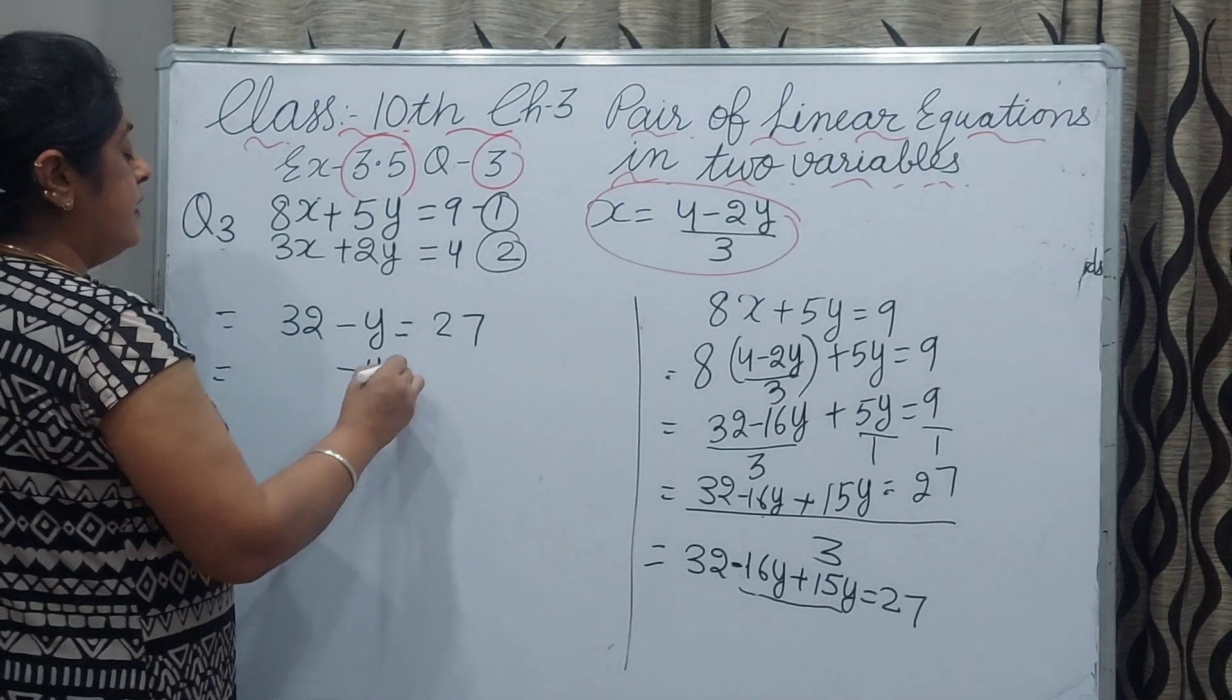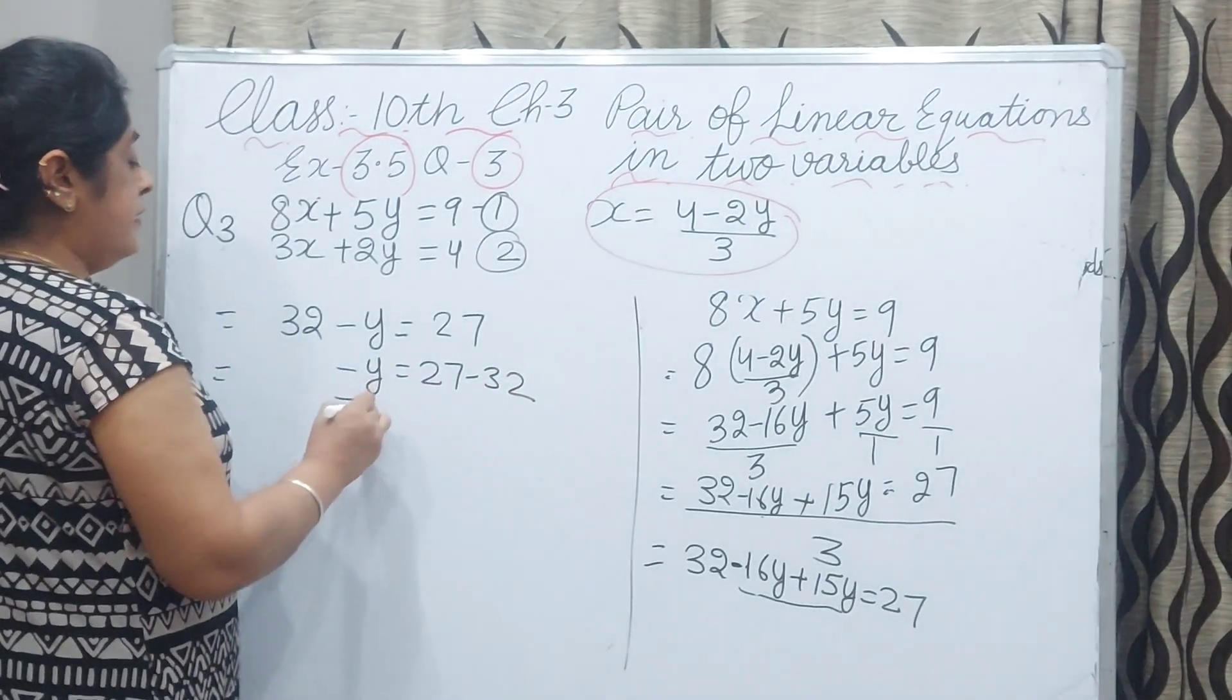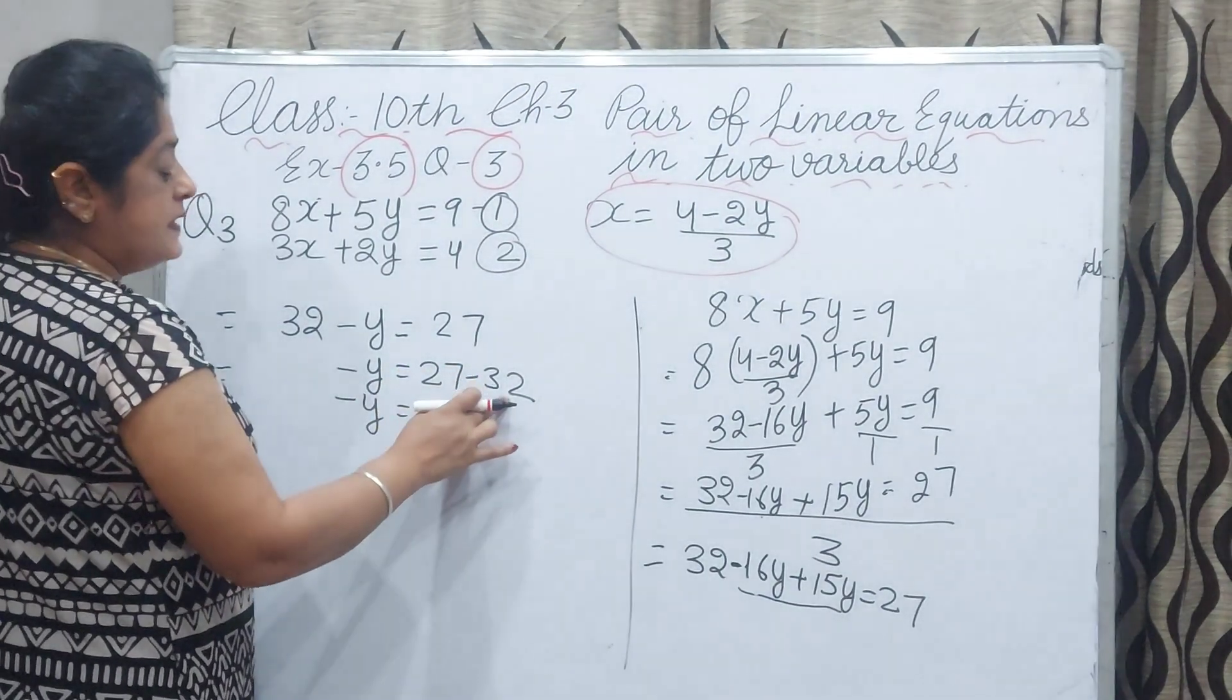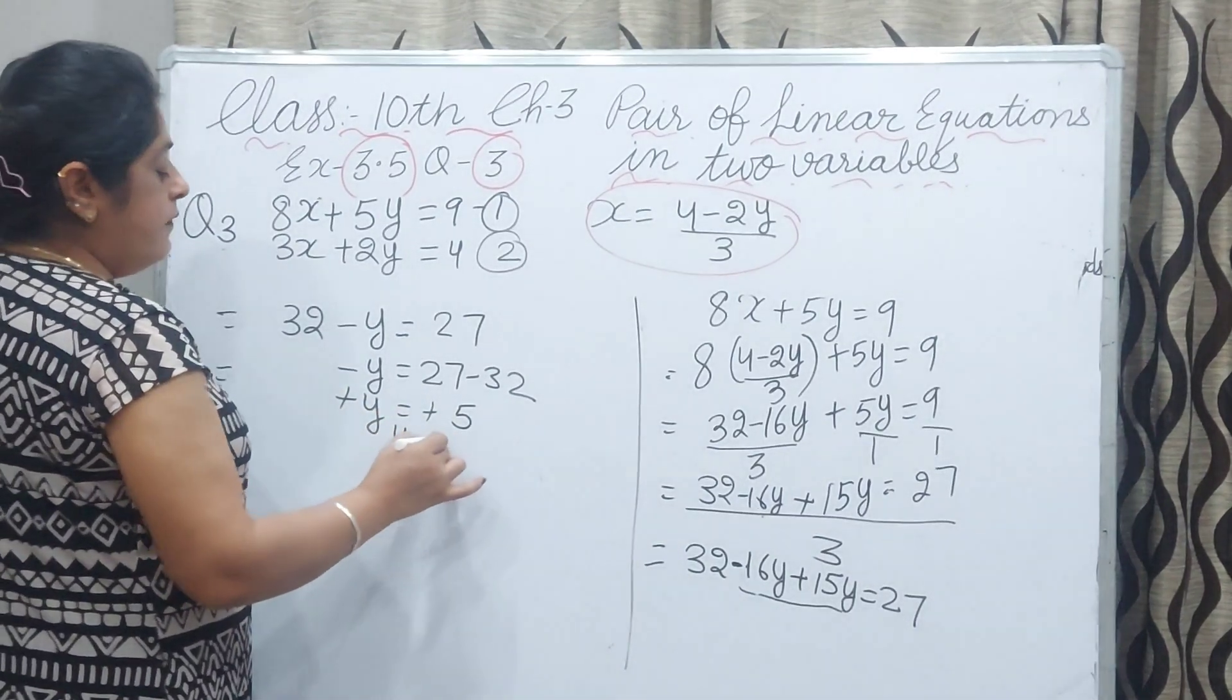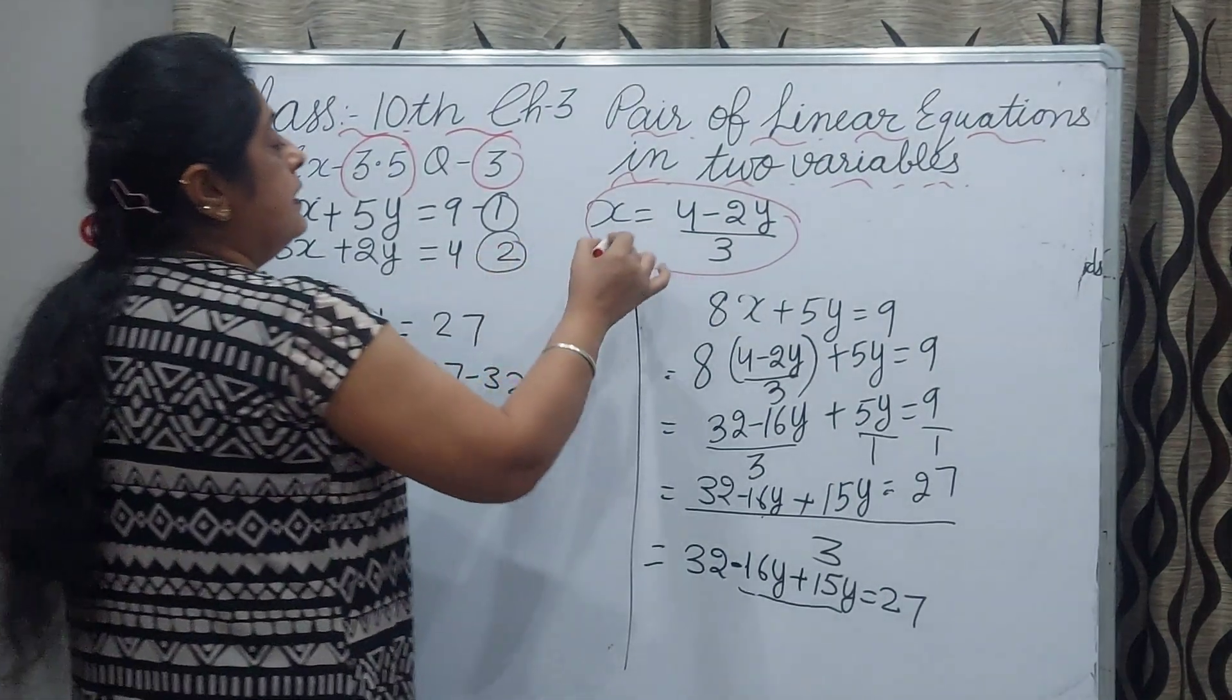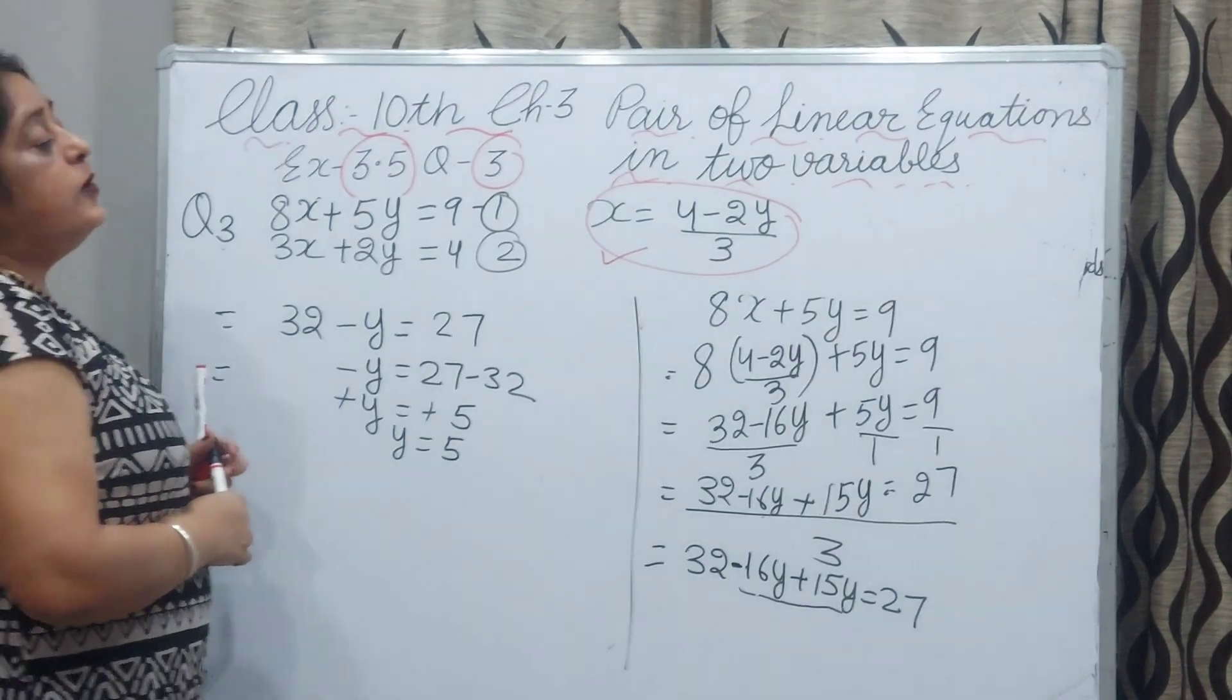Minus y, 27 minus 32. Minus y equals minus 5. 27 is positive, 32 is negative. Minus and minus cancel, so y value will be 5.